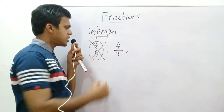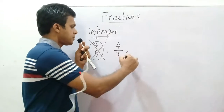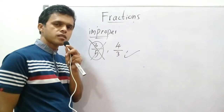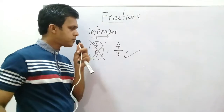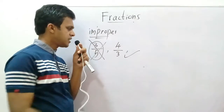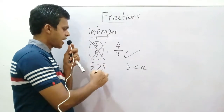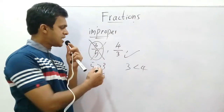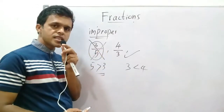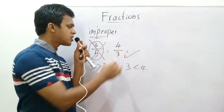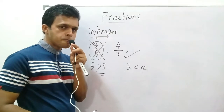Three over five is not an improper fraction. Four over three is considered an improper fraction. The reason: three is less than four here, so four over three is an improper fraction. But five is greater than three, so three over five is a proper fraction.